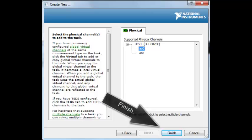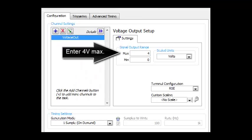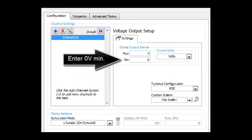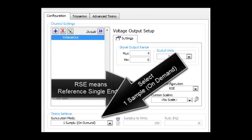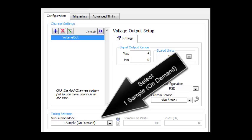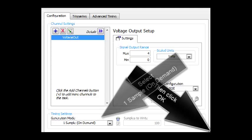Enter 4 volts maximum and 0 volts minimum. RSE means reference single ended. Select one sample on demand. Then click OK.